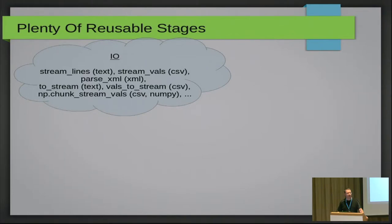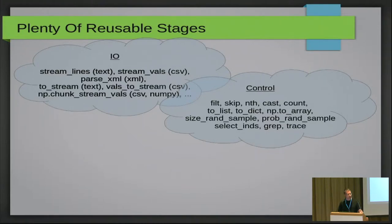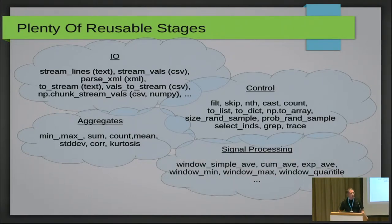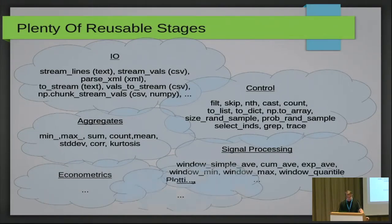Once you get the hang of these pipes, you can think of many reusable and useful stages: IO stages for reading and writing CSV, binary, and XML files; control stages for sampling or skipping parts of a data stream; aggregates like minimum, maximum, mean, and standard deviation; signal processing including FIR filters; econometric transformations; and plotting — relatively many reusable stages to write.